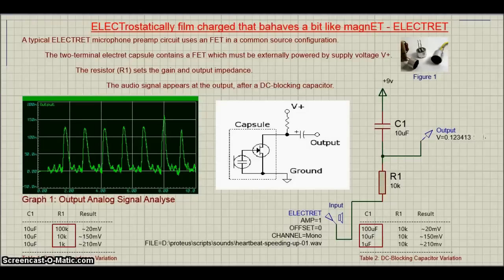Let me show you an experiment. First, I will keep a constant value of 10µF for DC blocking capacitor C1. Decreasing the resistor R1 provokes an increase in the sensitivity of the Electret.